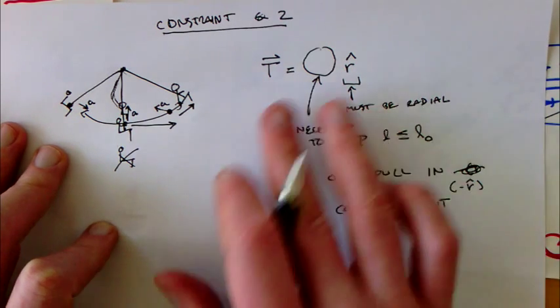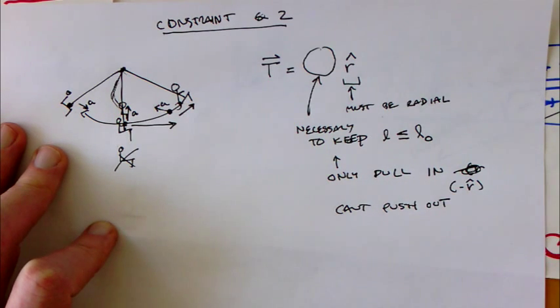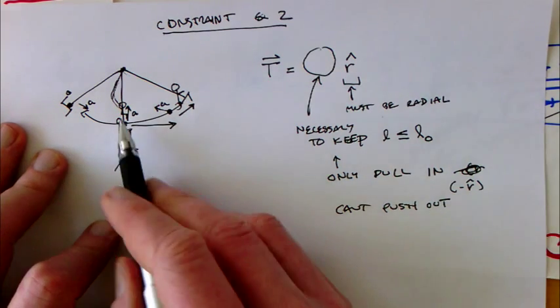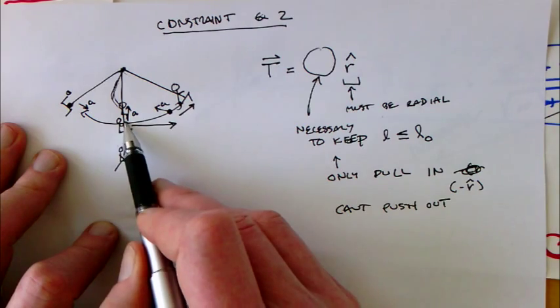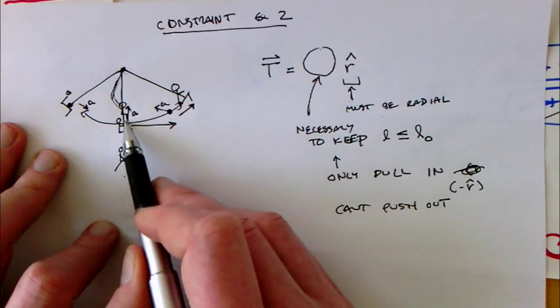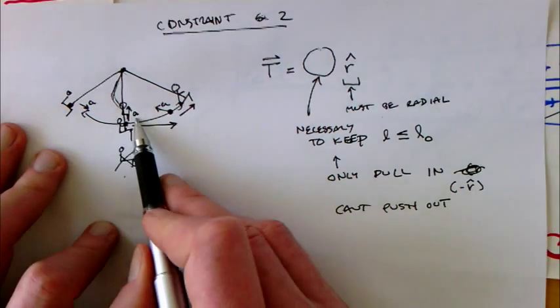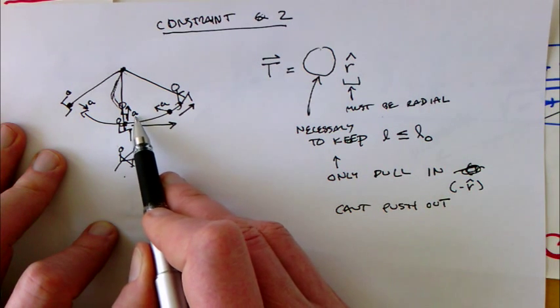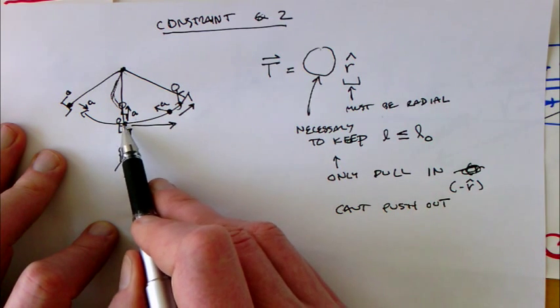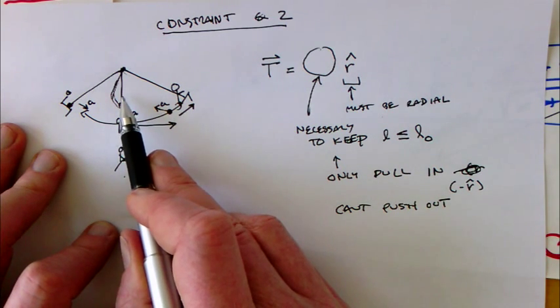Those are the things we can immediately say about it. If we think about what that tension is at different points - at this point you're going to have a lot of tension in that string, because you've got gravity pulling down, tension pulling directly up, and the net acceleration at that point is up. This tells you that the tension has to both offset gravity and give you that additional acceleration up.